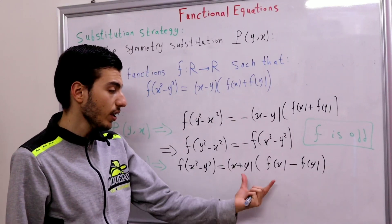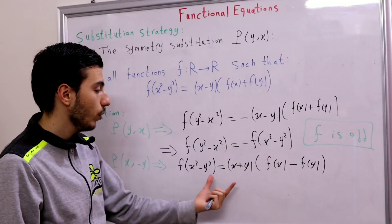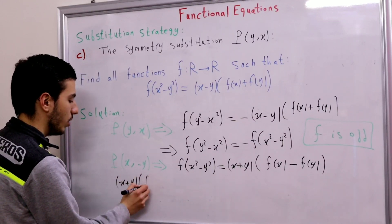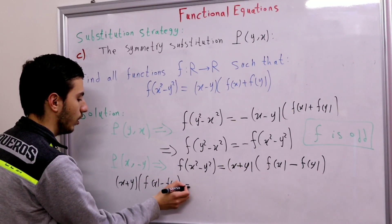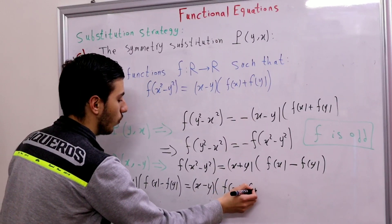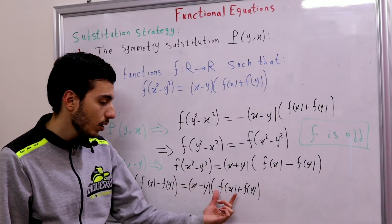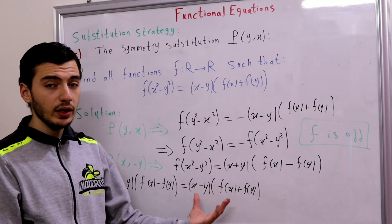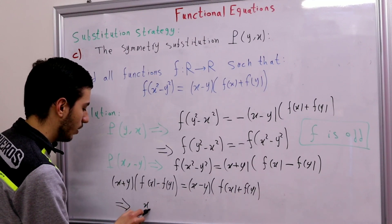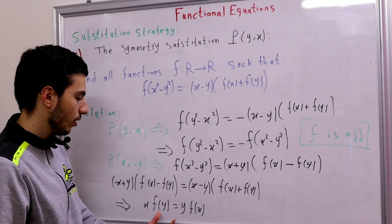Now if we compare this functional equation with the original, the left-hand sides are the same, so the right-hand sides must be equal. This gives us: (x + y)(f(x) - f(y)) = (x - y)(f(x) + f(y)). If we expand both sides, we easily get the simple relation: x·f(y) = y·f(x).